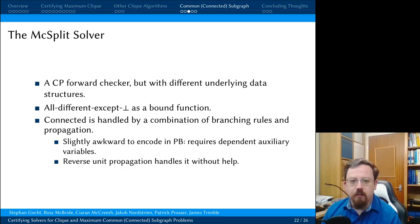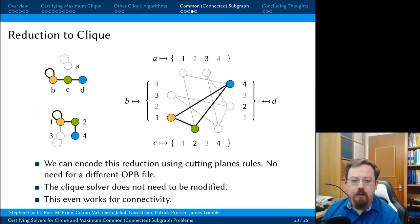It turns out that connected is slightly awkward to encode in pseudoboolean form. It does require dependent auxiliary variables. But once we've done this, reverse unit propagation can handle everything that the propagator and restricted branching does without any additional help. So we don't need to worry about it any further. Another popular approach to solving the problem is through reduction to clique. This is better on labelled graphs. It turns out that we can encode this reduction using cutting plane rules. So given a PB file for the constraint programming model, we can just turn this into a PB file for solving a clique. So that the verifier can check this, we can then give this to a clique solver and it can output a proof, not realising that it is working on a maximum common subgraph problem rather than a clique problem. And this works even when connectivity is involved. So a reformulation is handled within the proof logging system.